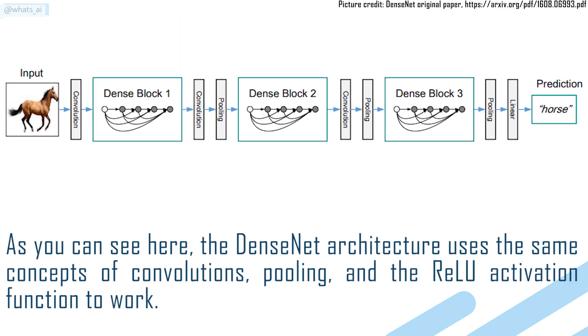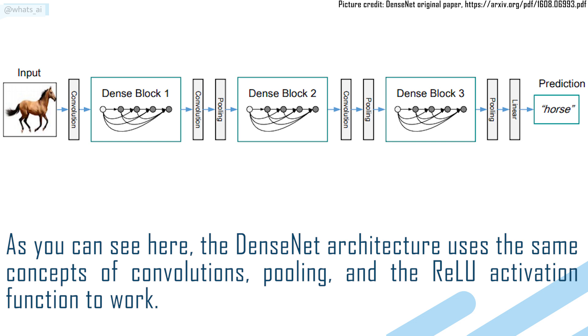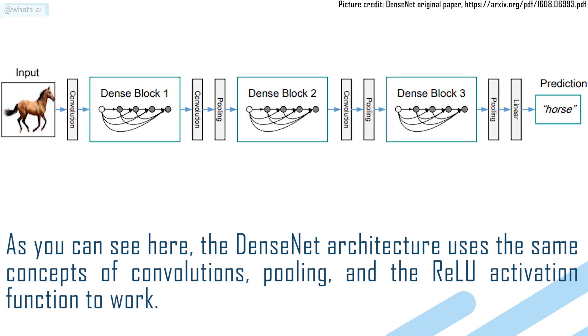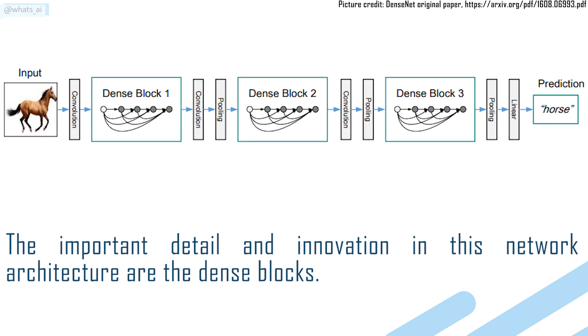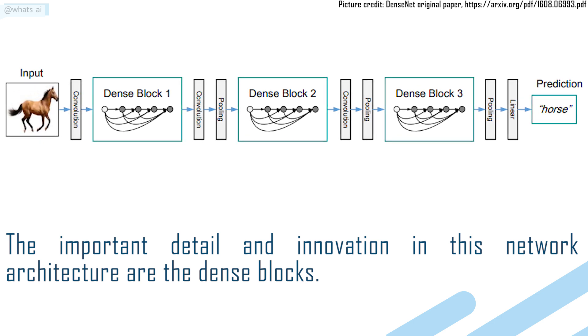As you can see here, the DenseNet architecture uses the same concepts of convolutions, pooling, and the RELU activation function to work. The important detail and innovation in this network architecture are the dense blocks.